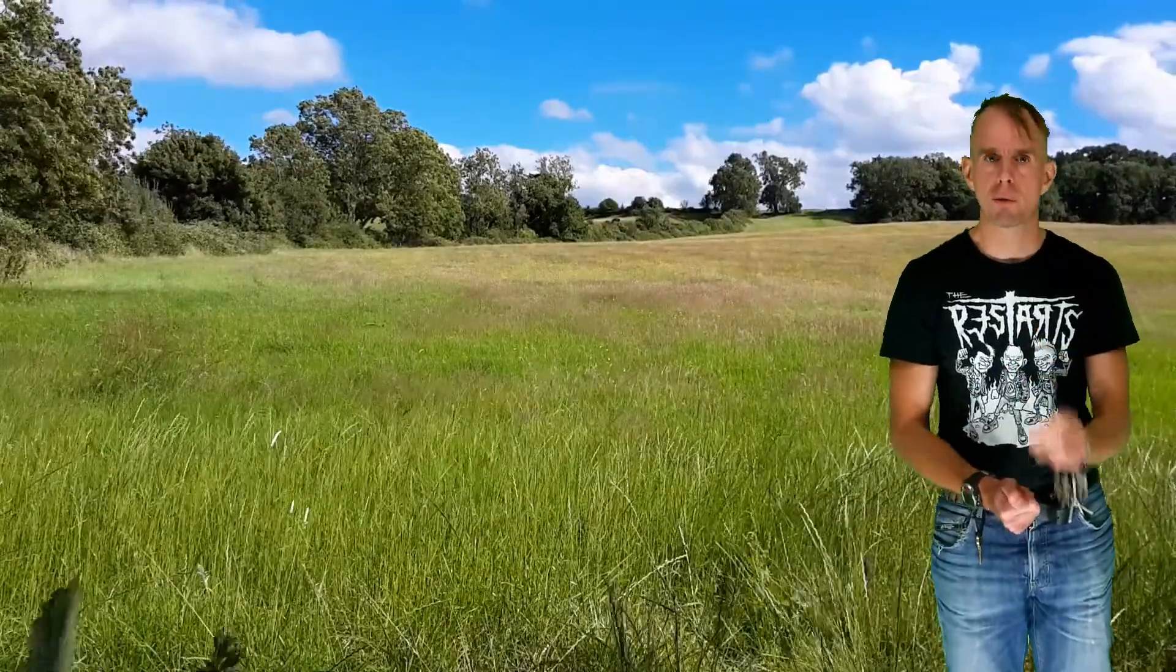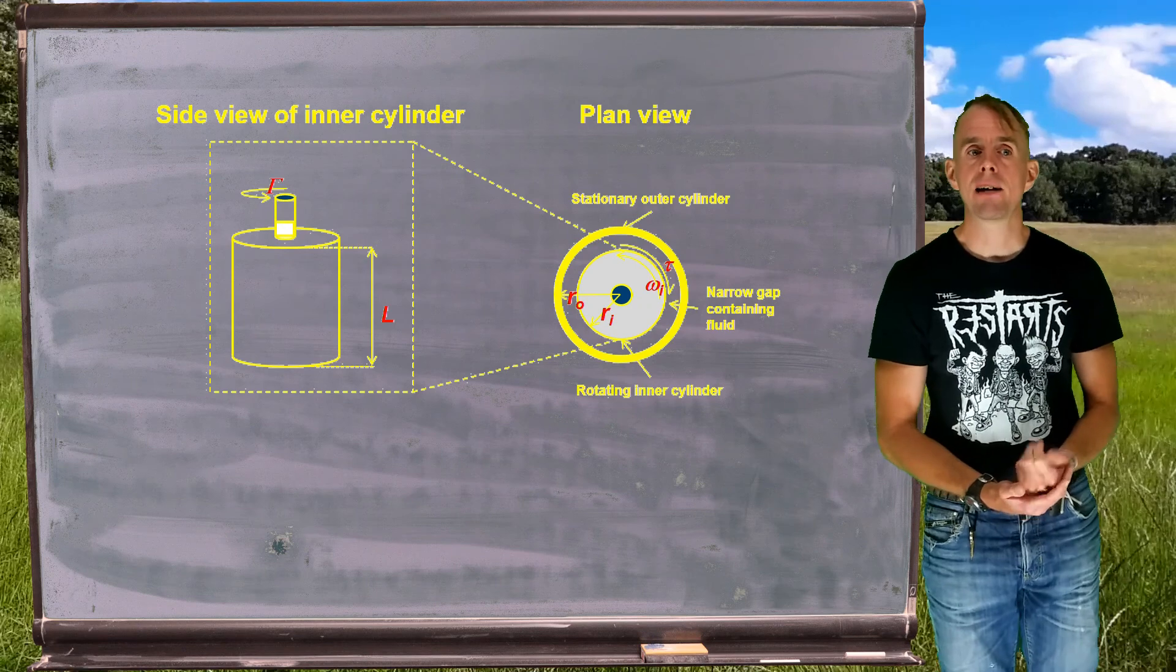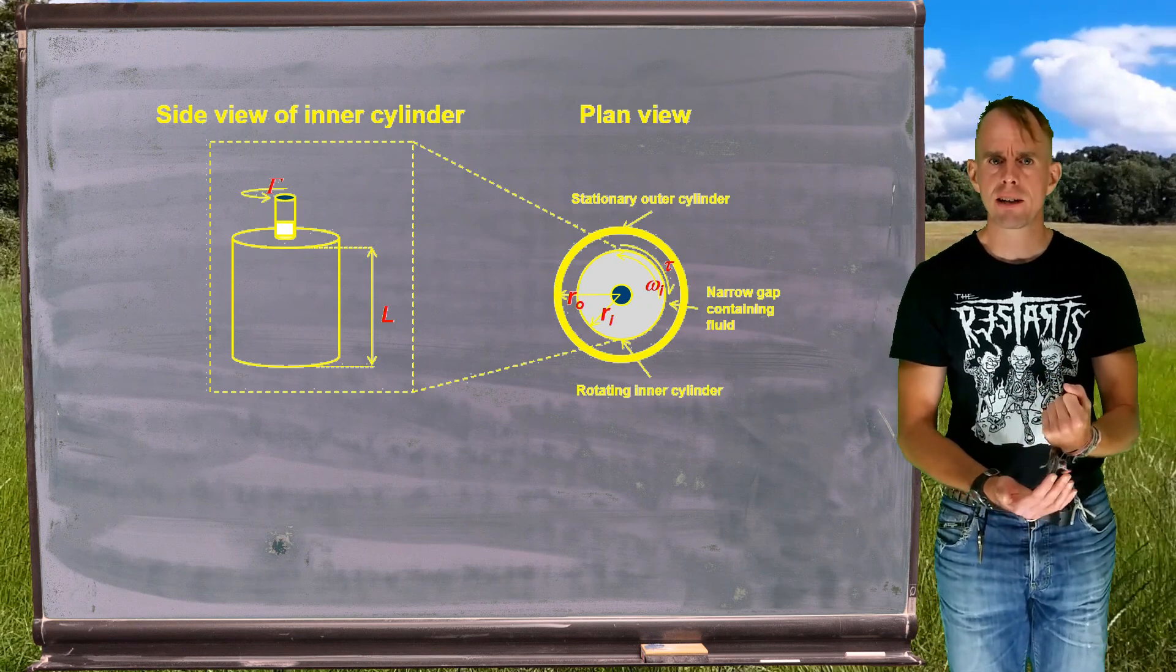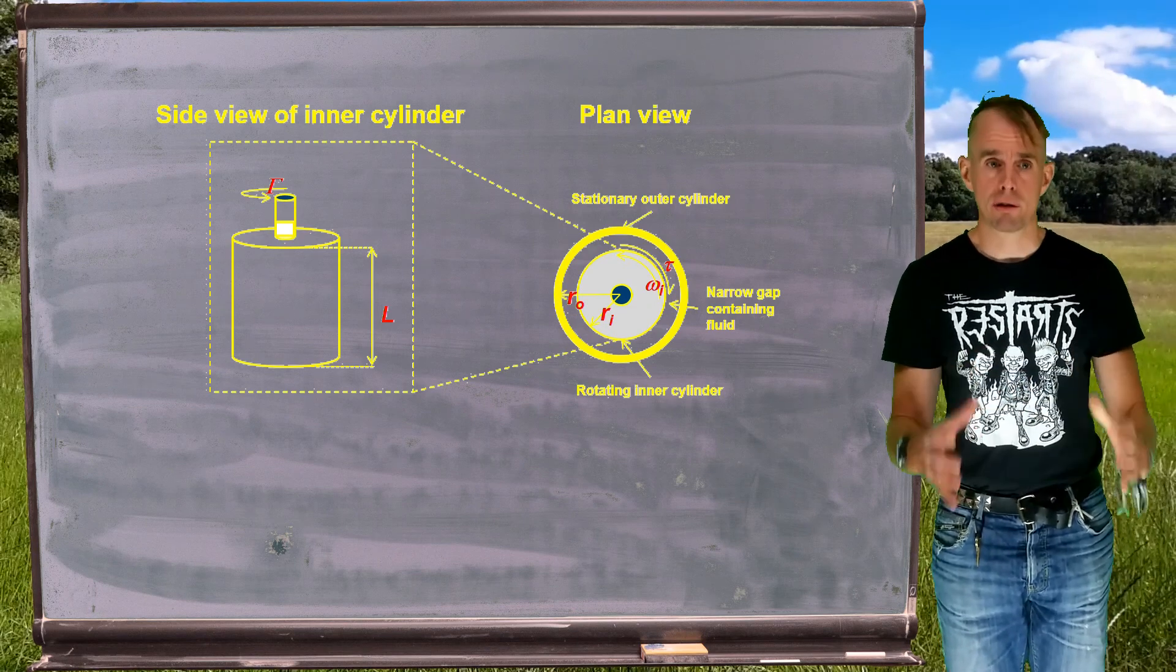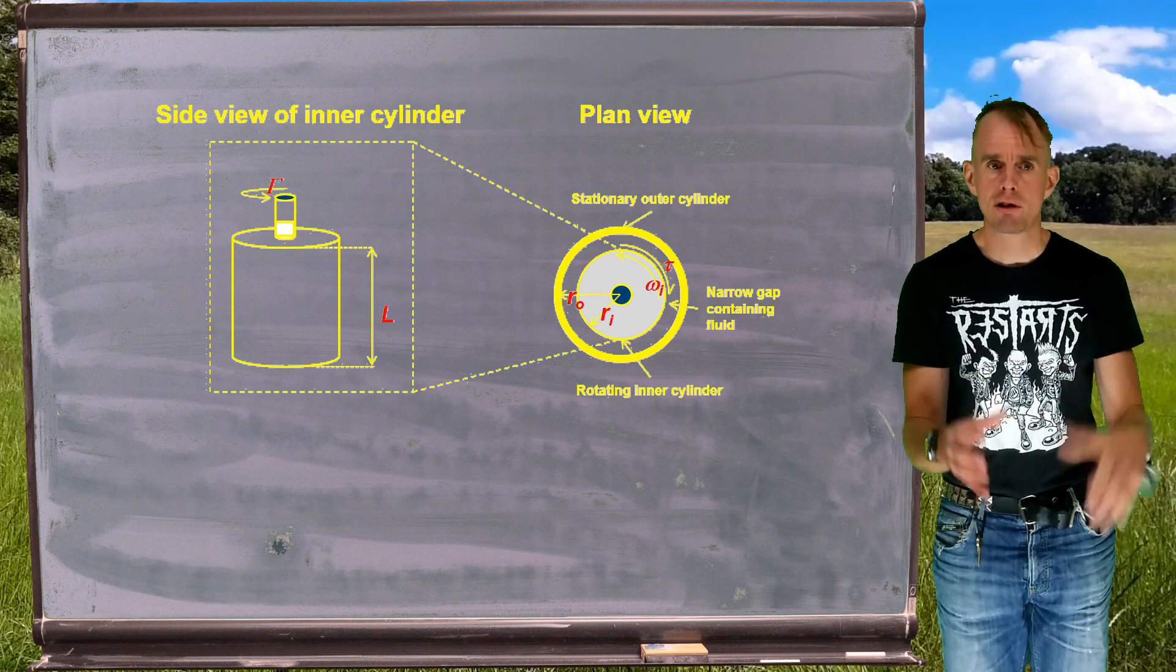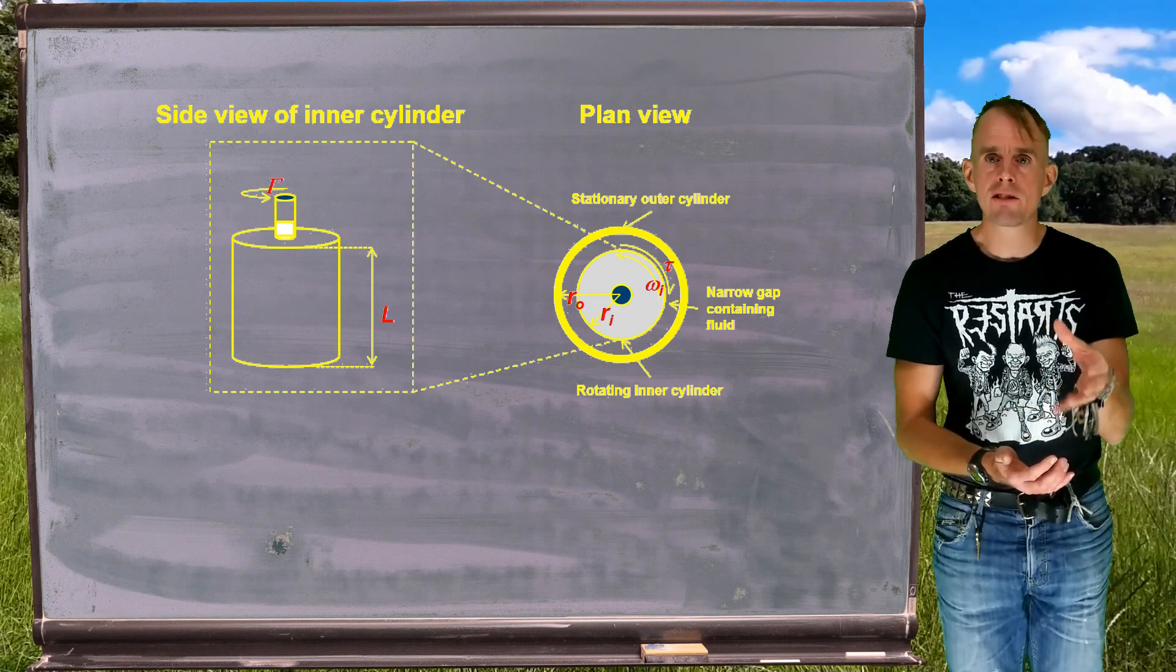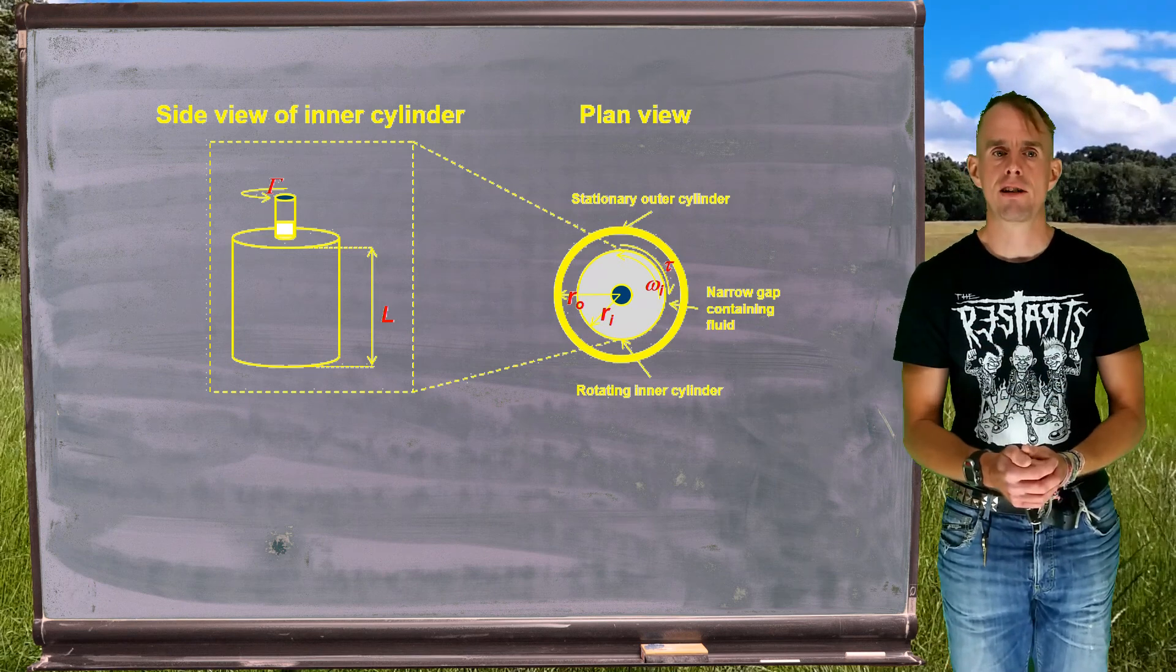And actually, what we'll see is that there's a practical consequence for this that's very relevant to chemical engineers. So let's start by having a look, once again, at our Couette cell in schematic form. Remember that a Couette cell is a solid cylinder sitting concentrically within a hollow cylinder. The gap between the two is filled with the fluid. In our example, the inner cylinder is rotated at a given angular velocity and the outer cylinder is held stationary.